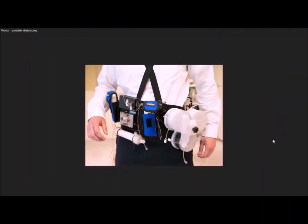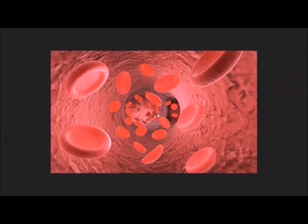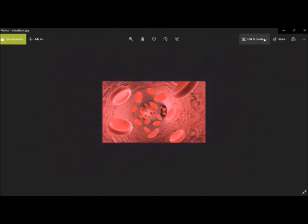Here we can see how a wearable artificial kidney looks like. The wearable artificial kidney is a miniaturized wearable machine designed to be worn like a belt and used by patients for up to 24 hours per day as a slow and gentle dialysis. It is considered the best way to mimic the natural kidney and its functions by constantly cleaning the toxins in blood.